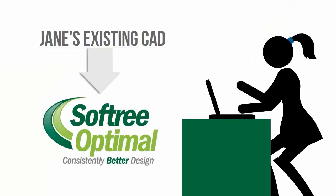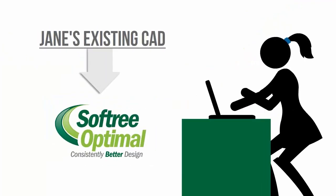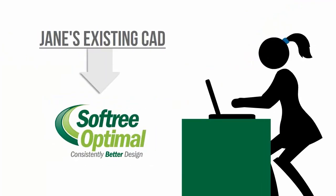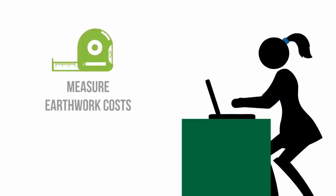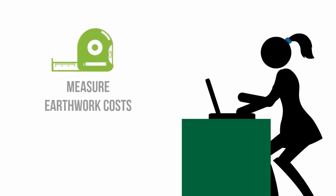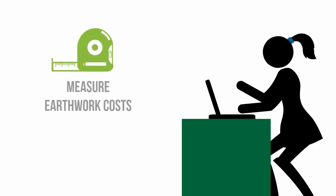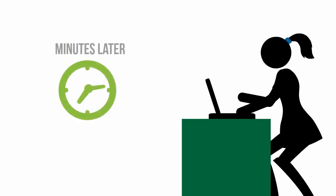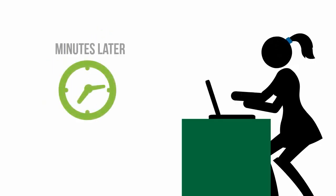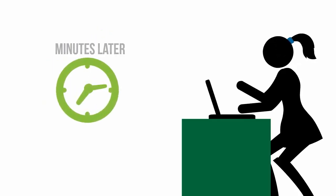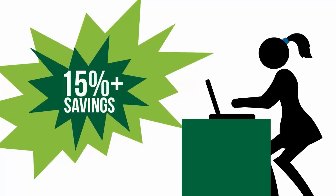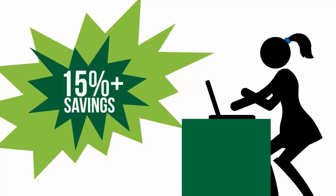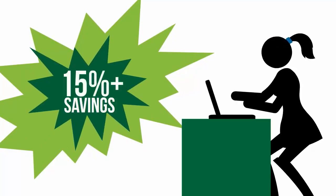Jane was able to design the alignment of her highway in her CAD program and import it into Softree Optimal. Once in Softree Optimal, she was able to measure the earthwork cost of her existing alignment. Then, within a matter of minutes, she had an optimal design costing about 15% less than her original.